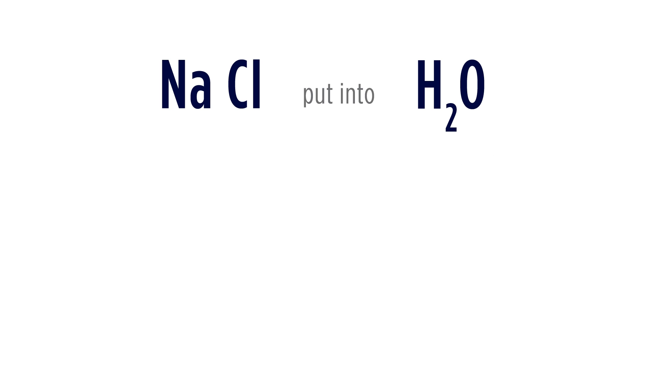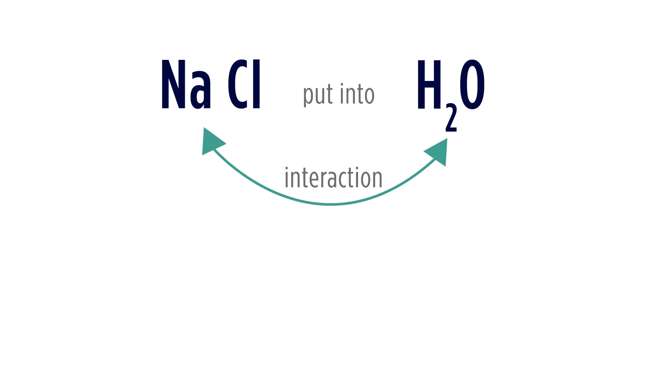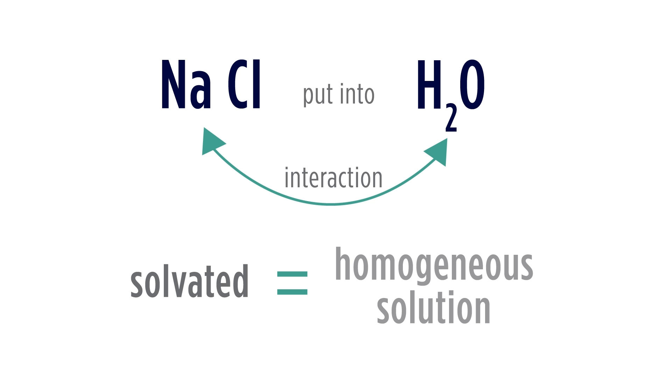The way to think about this is that if we have a solute, let's say sodium chloride, and we put it into water, before the sodium chloride can actually be dissolved into a homogeneous solution, there needs to be an interaction between the water molecules and the ions in the sodium chloride. A similar thing occurs with sugar when we dissolve sugar in tea. The sugar is going to need to interact with the water to become solvated or stabilized in solution to make a homogeneous solution.